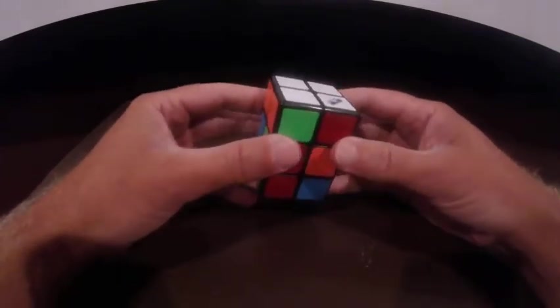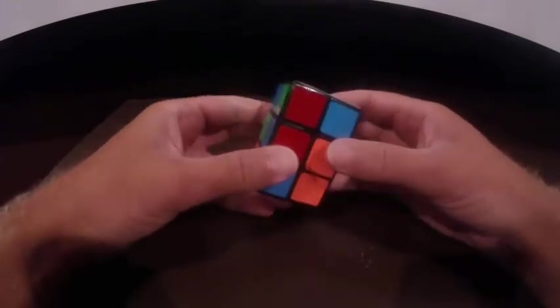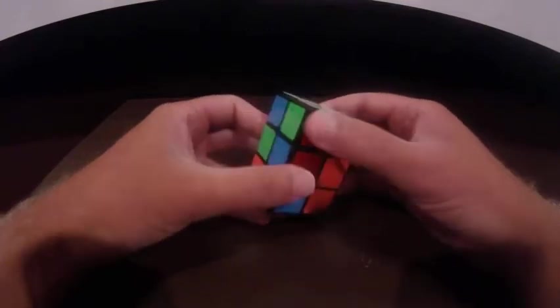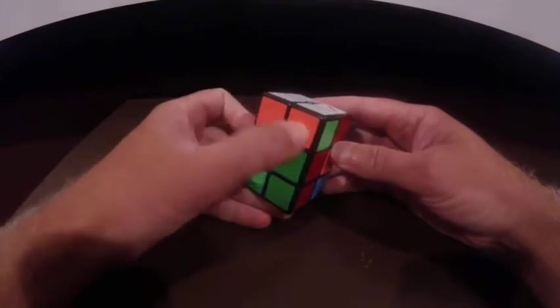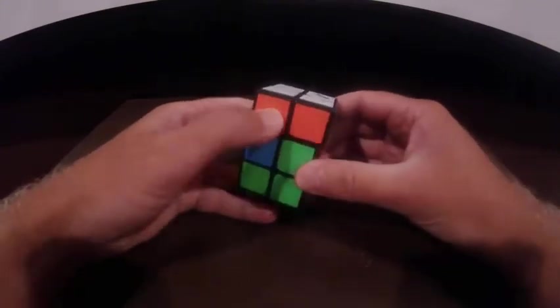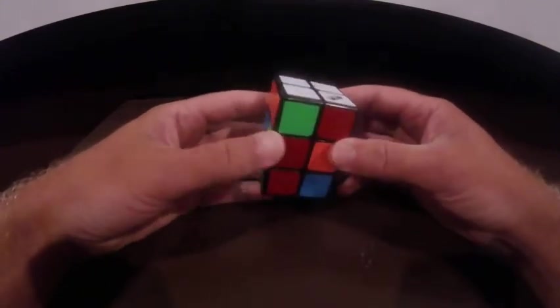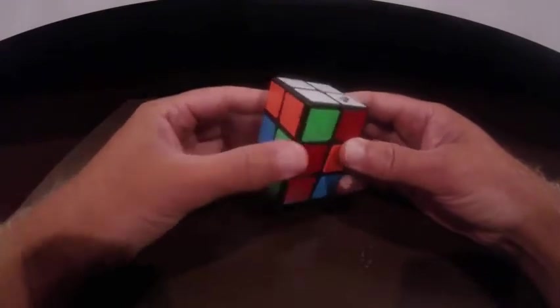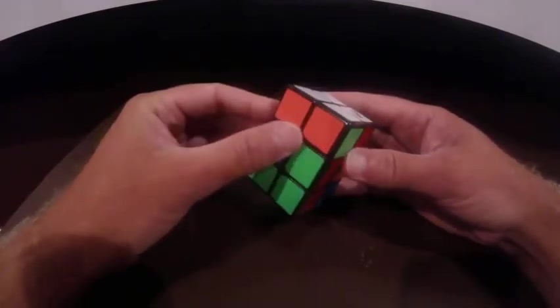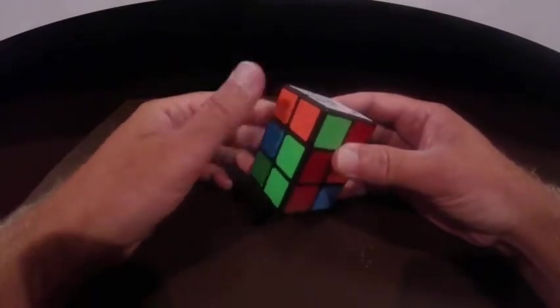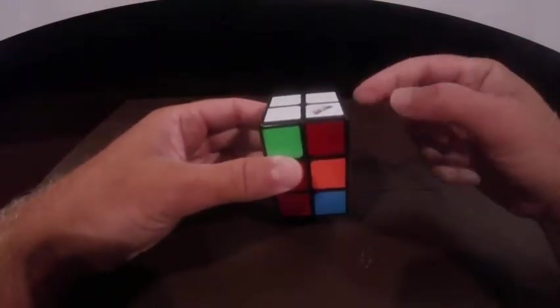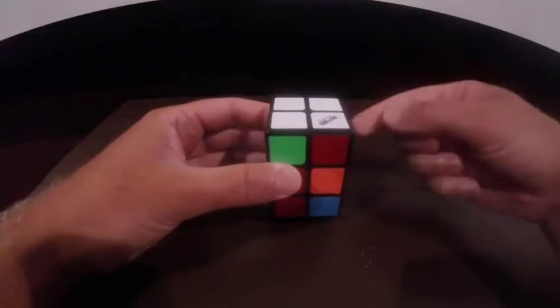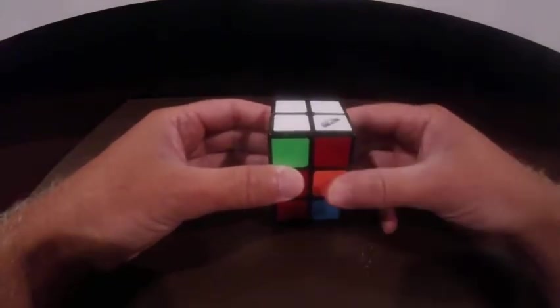Now, the next thing you want to look for is two colors that are next to each other that are solved. And I happen to have these orange. So that's what you want to look for. Once you have one set of colors that are solved, you want to hold those to your left. And then we're going to do an algorithm that is going to fix these others.